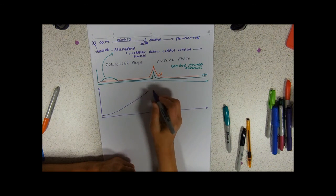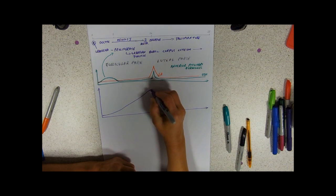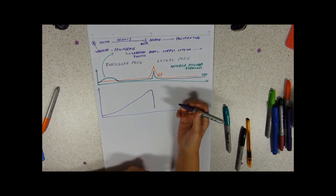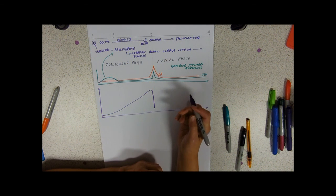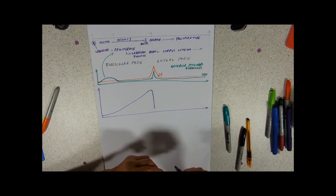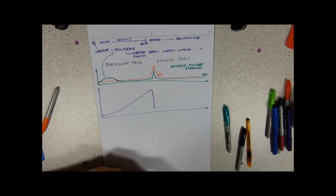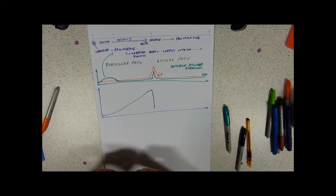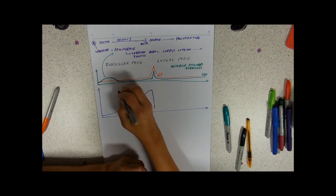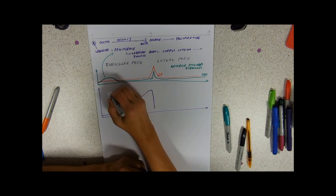So estrogen levels start out low, they're going to rise all the way till just before ovulation, and then inexplicably they're going to dip. I'm saying inexplicably because I have looked this up on all sorts of medical sites, fertility sites, everywhere you can't find out why. So nobody knows.